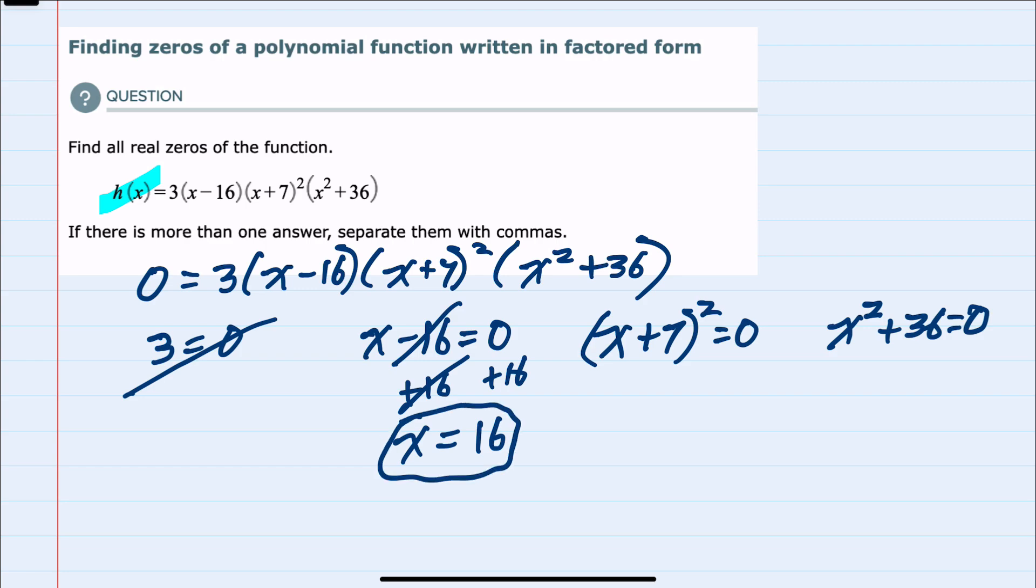Moving to the next part, we see that (x + 7)² = 0. To solve this for x, we would start by taking the square root of both sides giving us x + 7 = 0. Then subtracting the 7 to isolate the x, x = -7 is our second solution.